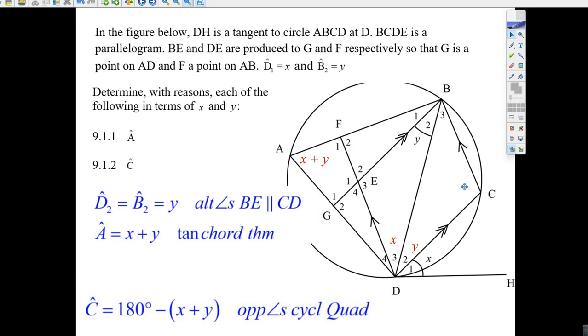Now over here, that's a cyclic quadrilateral. C, this must be 180 degrees minus this x plus y. What's the reason? Opposite angles of a cyclic quad, they've got to add up to 180. Okay, let's try the next part.